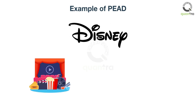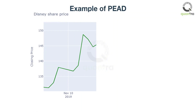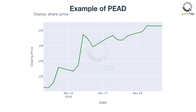Let us take a look at Disney's example. Disney is a well-known entertainment conglomerate. In addition to their movies and theme parks, it has acquired quite a few companies on its own. On November 7, Disney's price was $132 when it released its fourth-quarter earnings report, beating estimates of both revenue and profits.